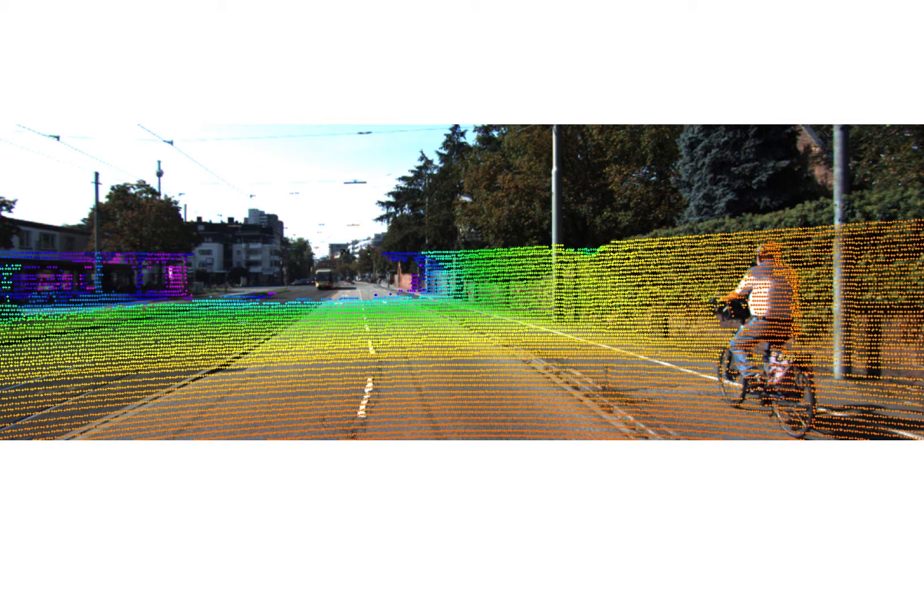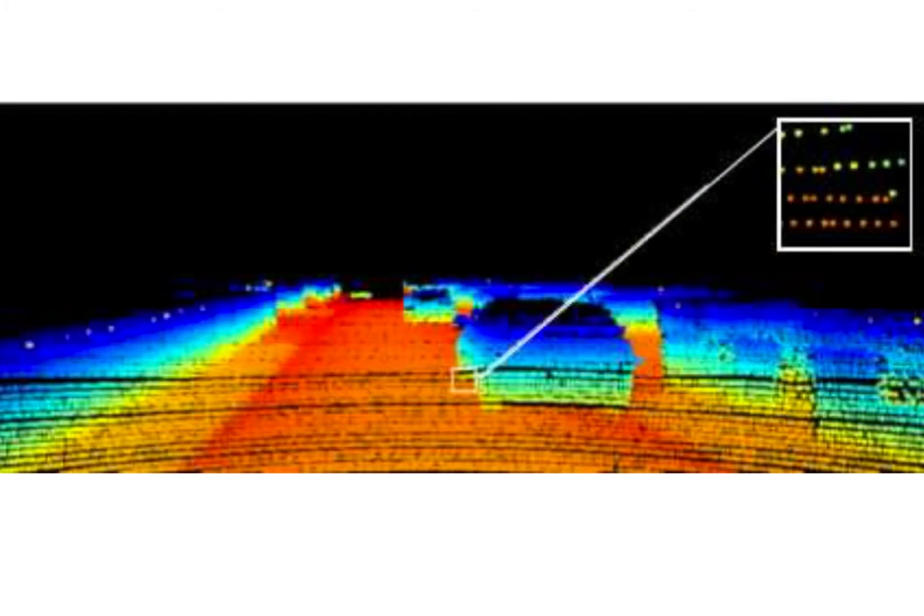However, the LiDAR dataset actually contains more information than that. If we change our perspective, for example, assigning the color with respect to Z instead of distance, we will have an image like that. Now we can see an image like a heat map. From this image, we can easily tell where is the edge of the road, where is the car and obstacles, and where is the road.